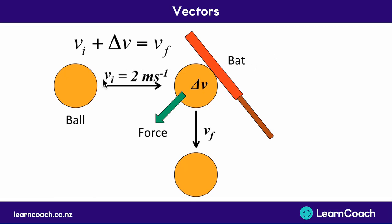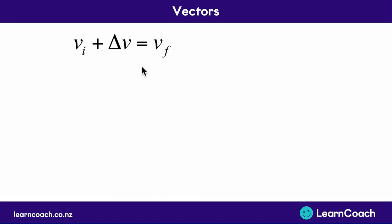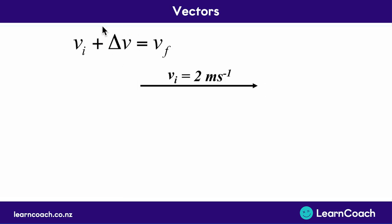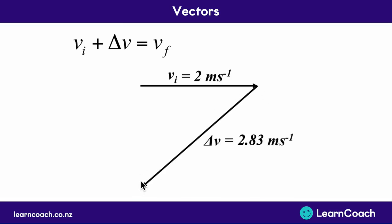If we put some numbers in — say we were initially going at 2 meters per second, had a change in velocity of 2.88 meters per second, and it ends up going a final velocity of 2 meters per second again. We can actually draw arrows, real vectors, that should all match up. The initial velocity was 2 m/s, the change in velocity was 2.88 m/s going down-left, and the final velocity was coming straight down at 2 meters per second. It all matches up.